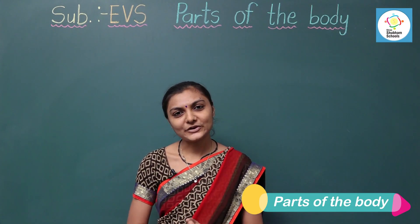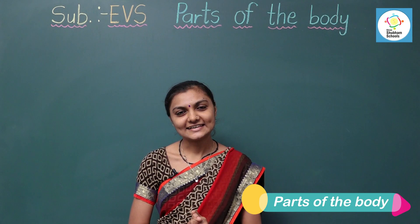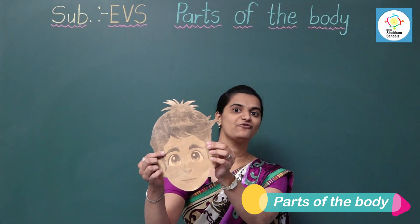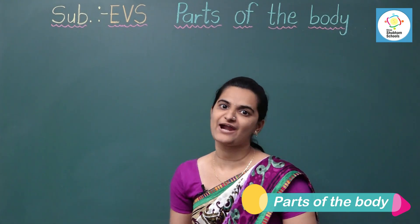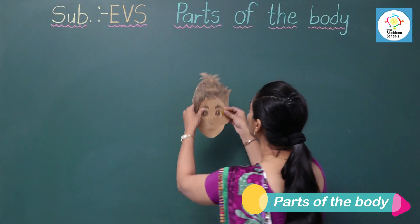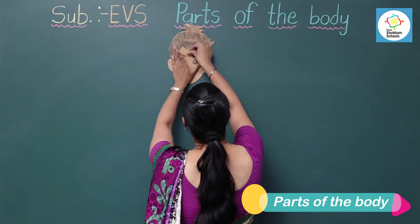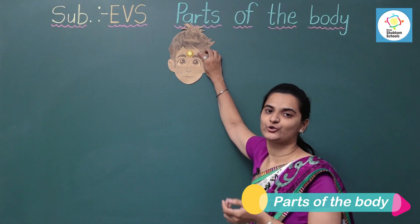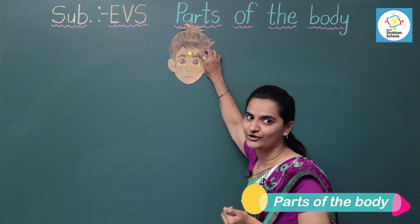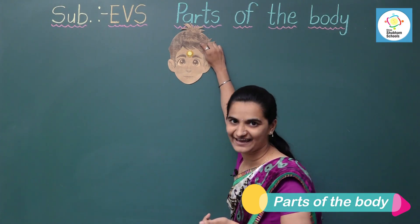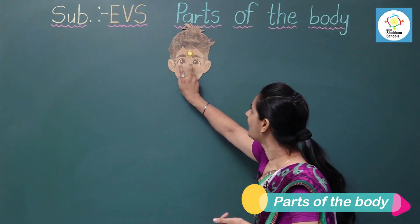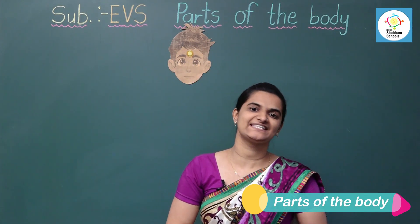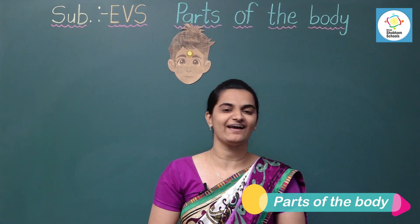So are you guys ready for it? Yes, let's begin. This is the face. Face is part of our body. Head is on the top of the body. And these are hair. We have two eyes. We can see with our eyes.